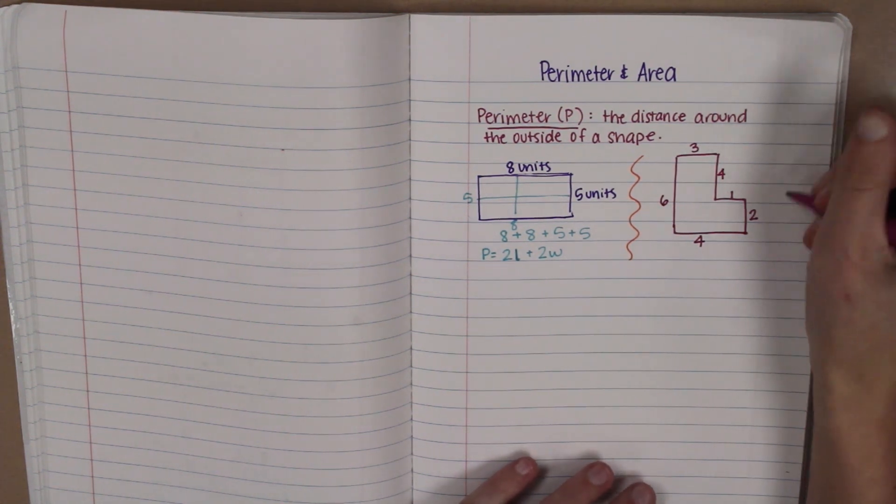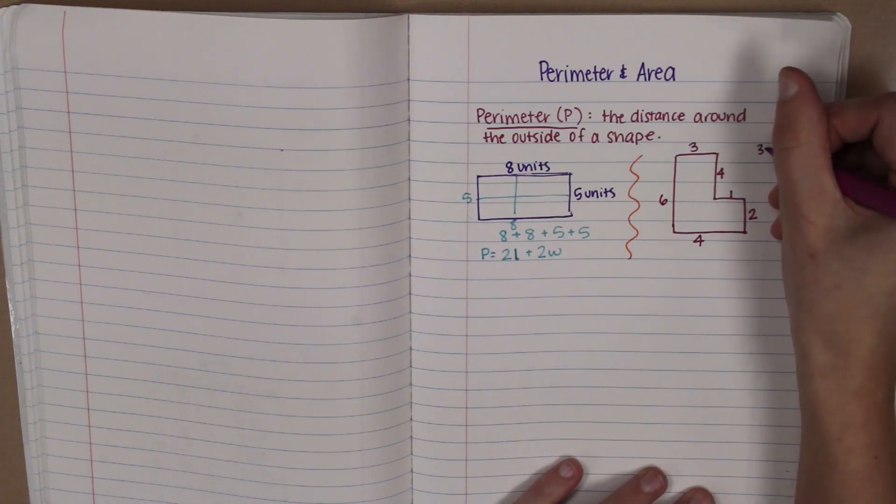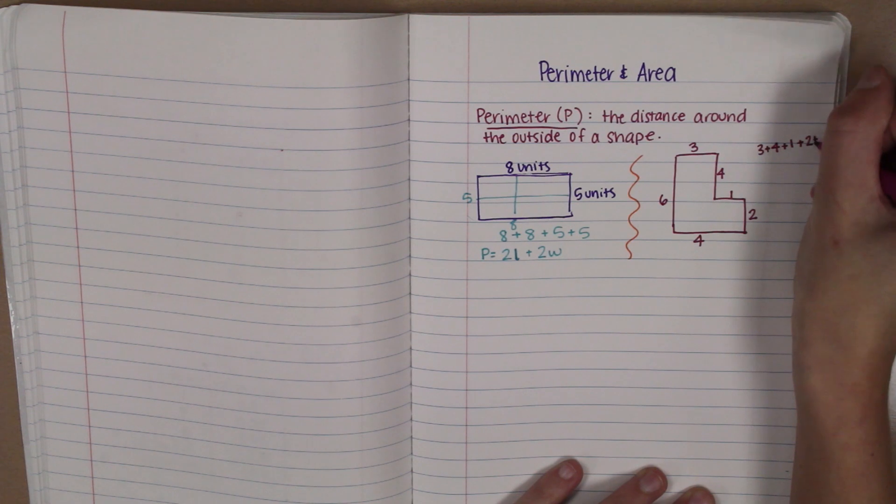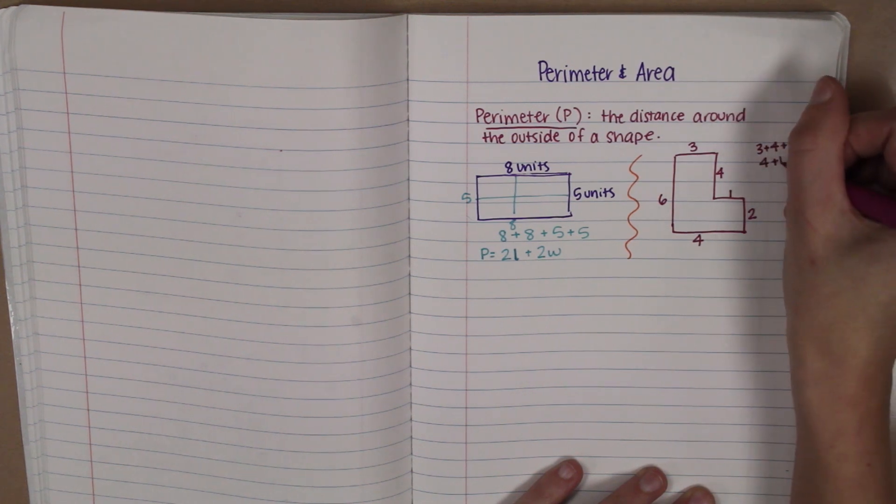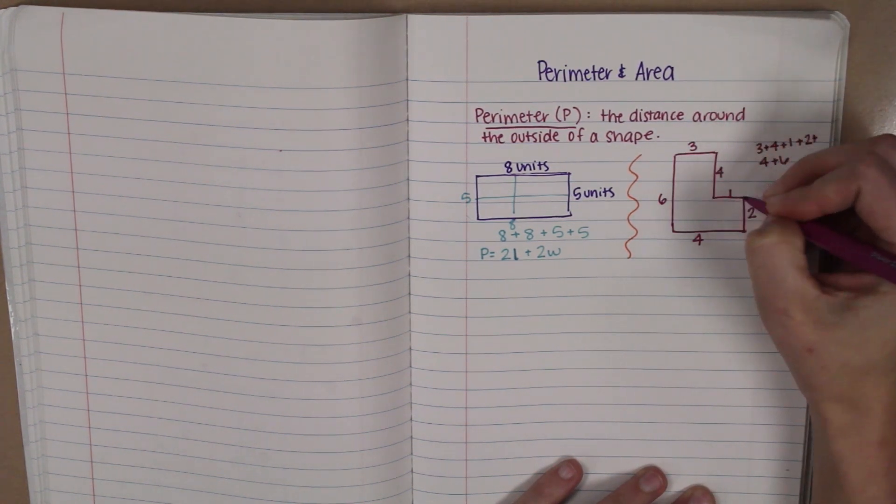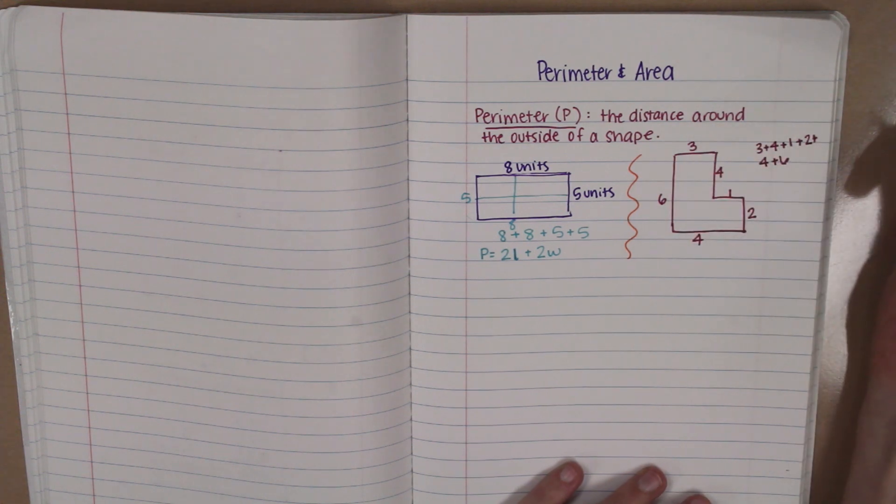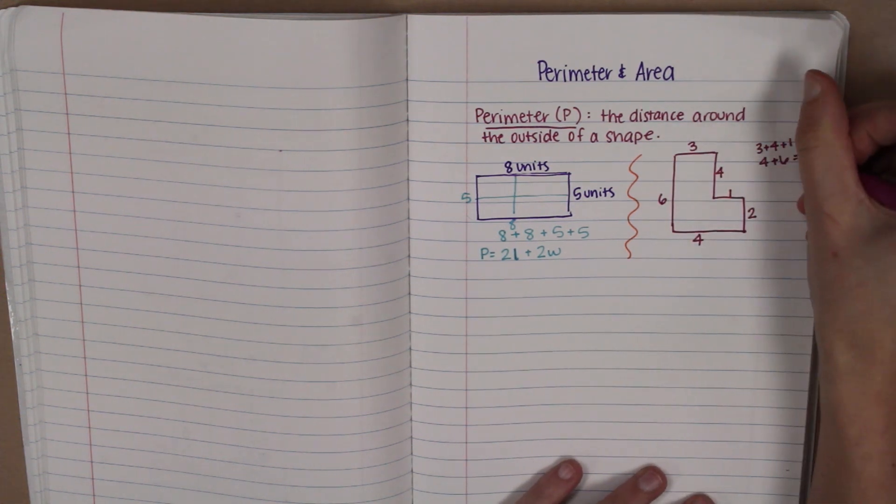So another way that you could do it is just to add up all sides. So in this case it would be three, plus four, plus one, plus two, plus four, plus six. It may help you to kind of check off or cross off the sides or the numbers as you go around to make sure that you get all of them. And that would equal your perimeter.